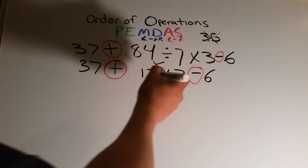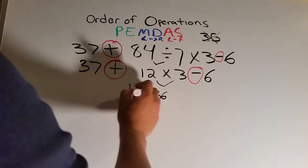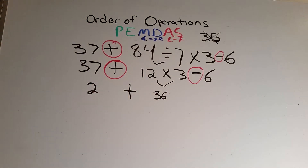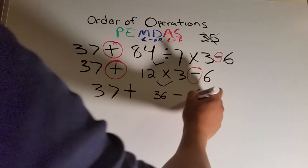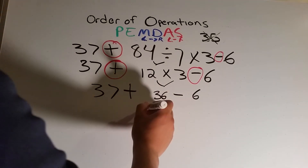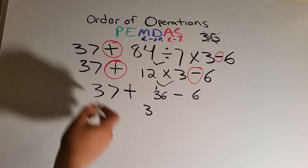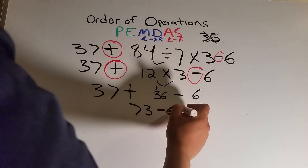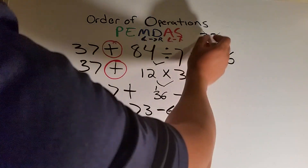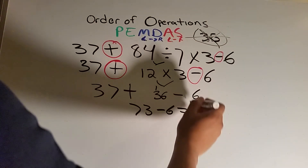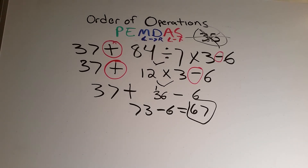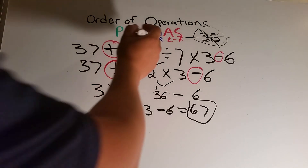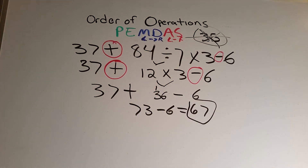Now 12 times 3 gives us 36. Bringing everything down: 37 plus 36 minus 6. So 37 plus 36 — 7 plus 6 is 13, carry the 1, 1 plus 3 is 4, plus 3 is 7 — gives us 73... minus 6, and this answer is actually 67. So we went from getting 35, which was completely wrong, to the correct answer of 67. When you do PEMDAS, multiplication and division are the same, and you do them from left to right — same thing with addition and subtraction.